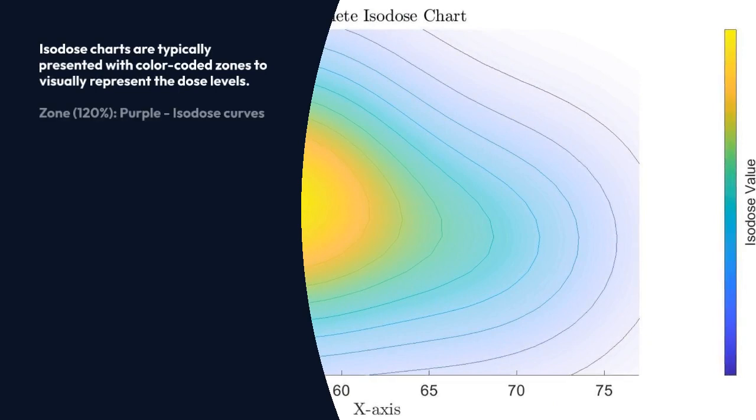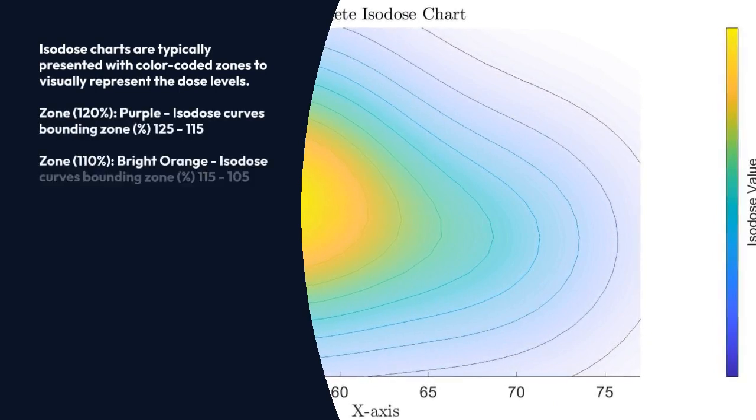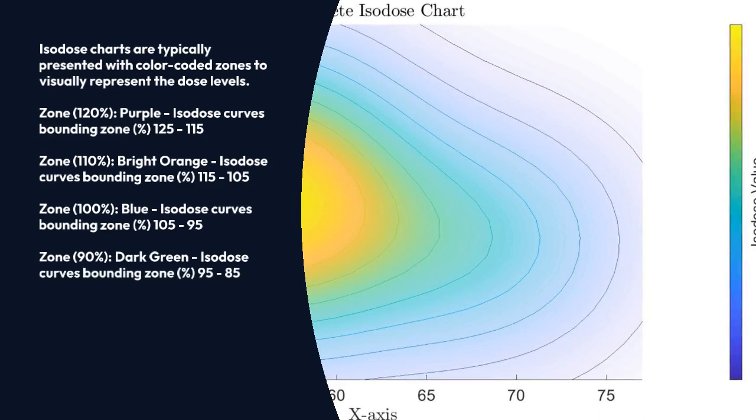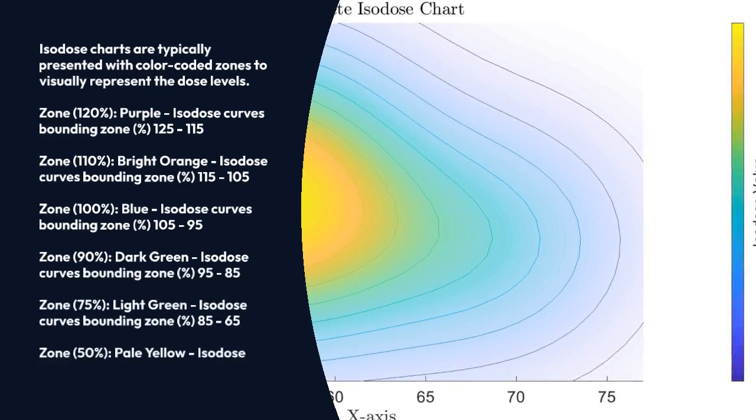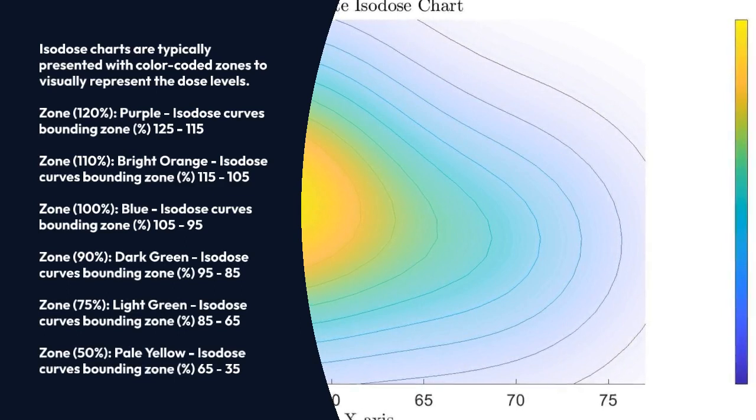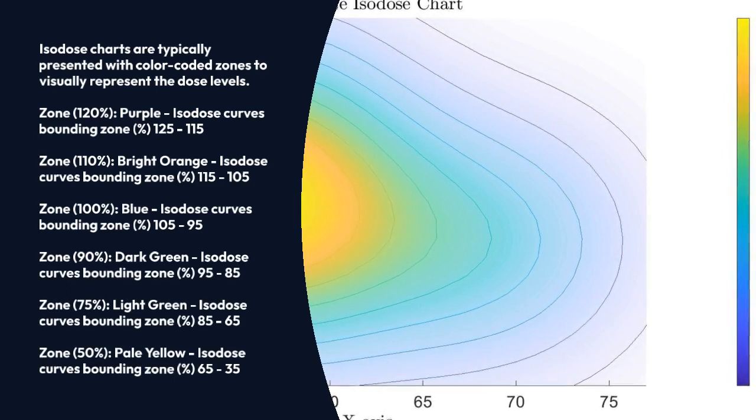Isodose charts are typically presented with color-coded zones to visually represent the dose level. Zone 120 percent purple, 110 percent bright orange, 100 percent blue, 90 percent dark green, 70 percent light green, and 50 percent pale yellow.